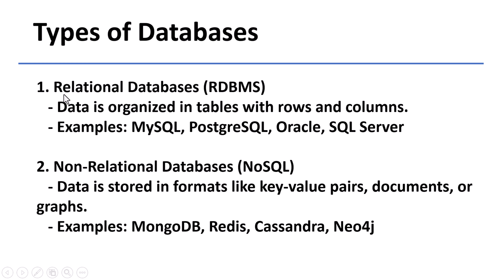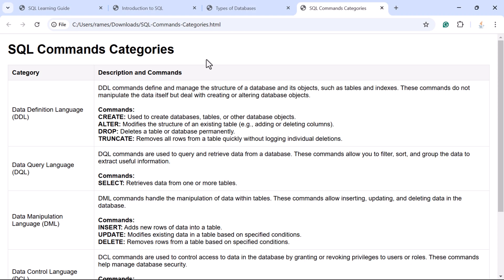Let's take a look at the types of databases. There are two types: relational databases and non-relational databases. In relational databases, data is organized in tables with rows and columns. Examples include MySQL, PostgreSQL, Oracle, and Microsoft SQL Server — all of which support SQL. In non-relational databases, data is stored in formats like key-value pairs, documents, or graphs. Examples include MongoDB, Redis, Cassandra, and Neo4j. We mostly use SQL to interact with relational databases.